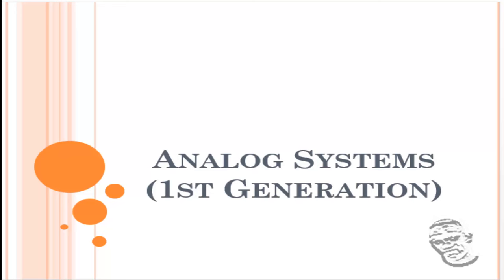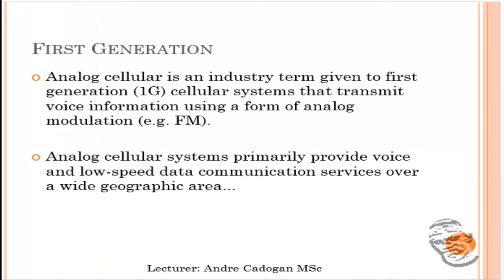Today we're looking at analog systems in first-generation mobile multiplexing technology. We're going to begin by looking at what is considered frequency modulation for analog technology. The analog first-generation cellular industry, in terms of 1G cellular systems, transmits only voice information using a form of FM modulation. Analog cellular systems primarily provide voice and low-speed data communication services over a wide geographic area using the FM band.